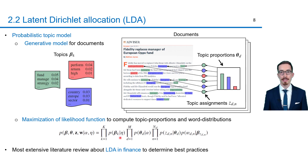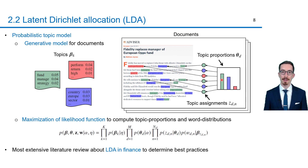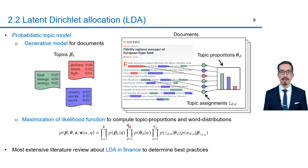The probability of creating these topics can be computed by the first product in this equation. LDA assumes that the proportions of each topic in each document are drawn from a Dirichlet distribution. According to this bar diagram, the most important topic in this document is fund management. This seems consistent since the article is about replacing a fund manager. The probability of creating these topic proportions is computed by this second product in this equation.